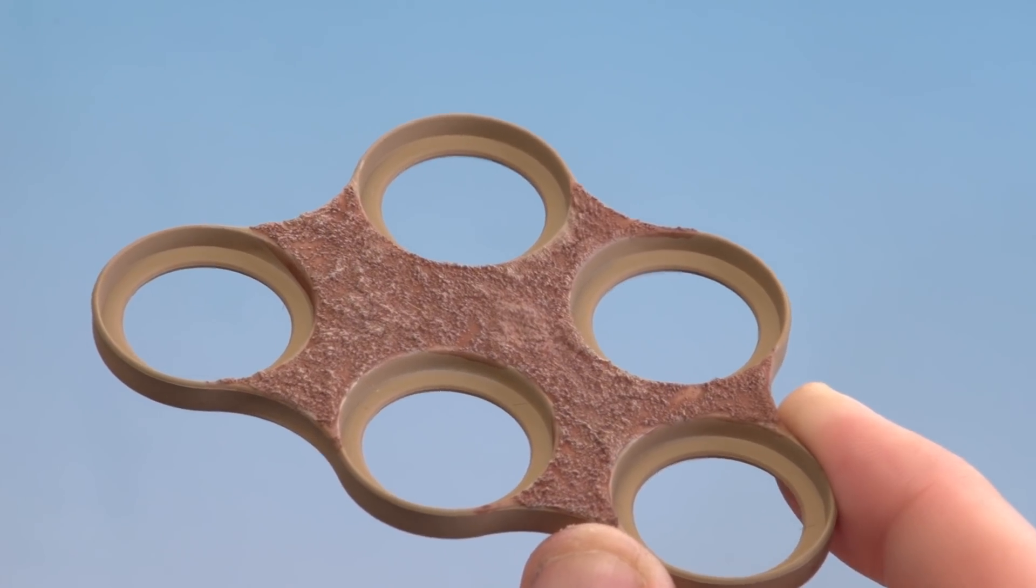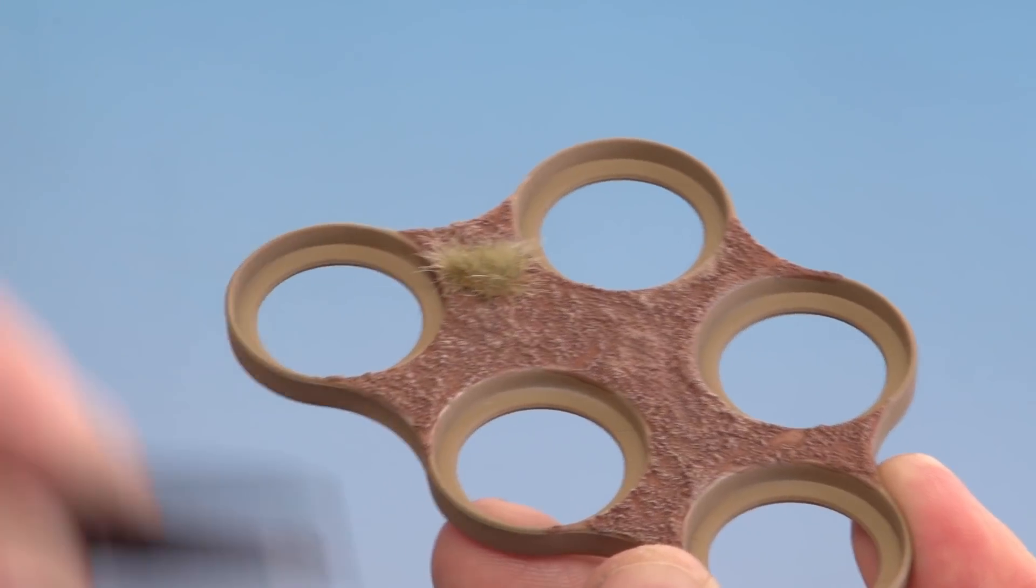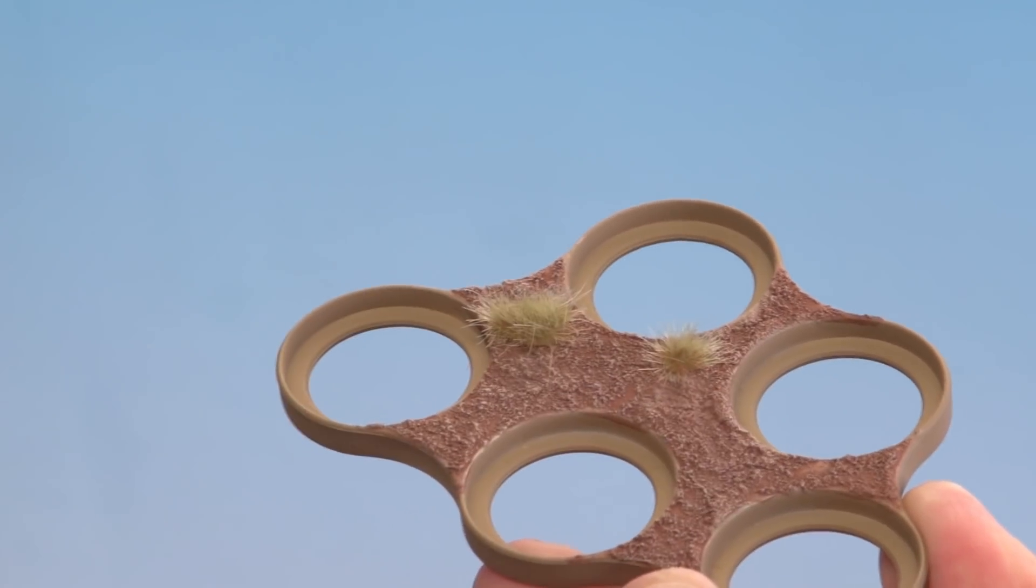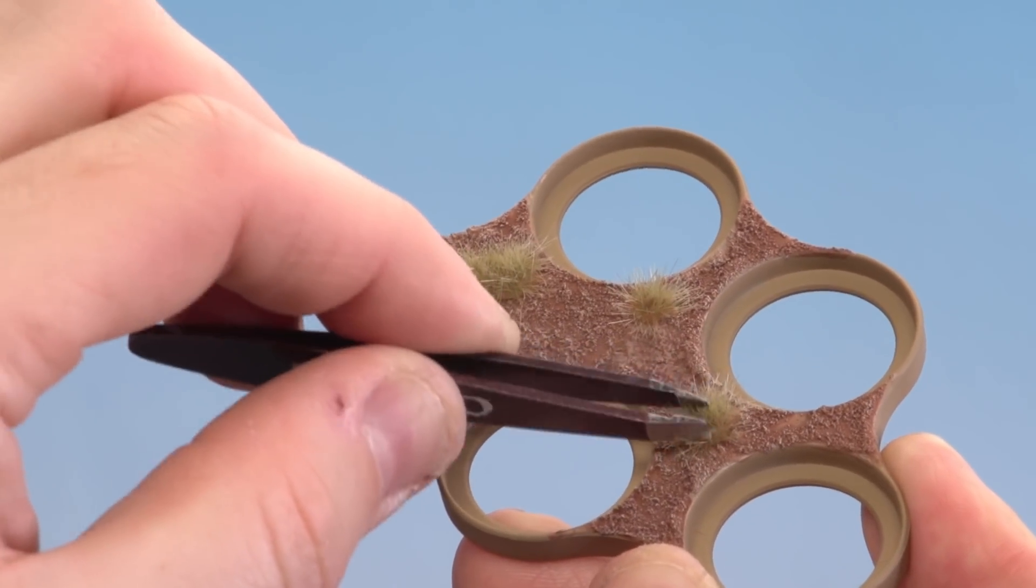With the texture now dry brushed, we're going to add some Midland Tufts. I'm just going to sporadically place these across the movement tray and we'll be using different sizes as well. This will stop it looking too uniformed. Just take your time to keep adding new ones on.